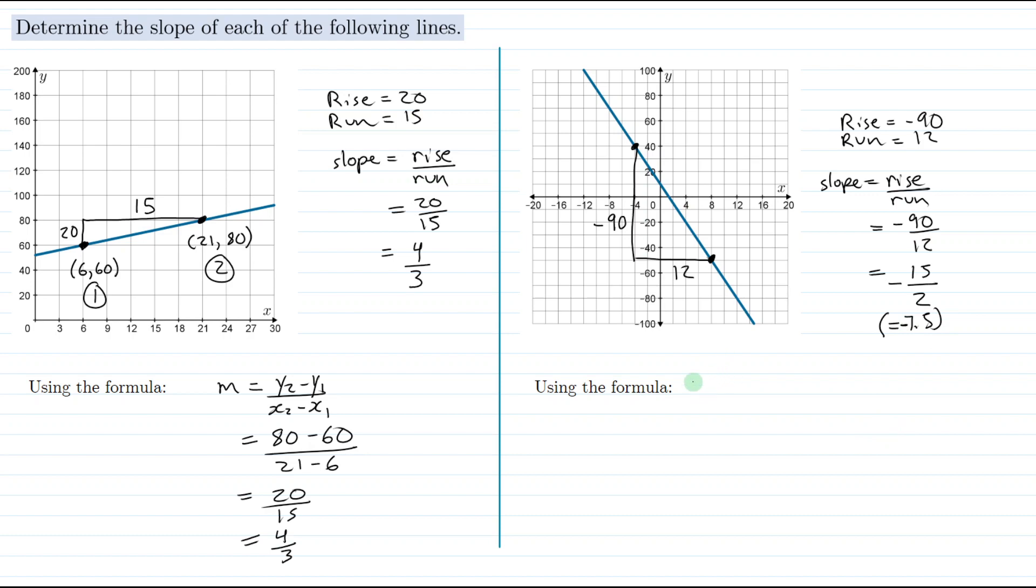Let's look at the slope formula again. Here we have m equals y2 minus y1 over x2 minus x1. I'll call the point on the left point 1, and its coordinates are negative 4, 40. And the point on the right here will be point 2, and its coordinates are 8, negative 50.